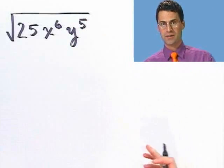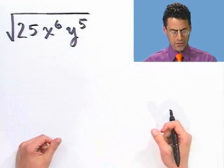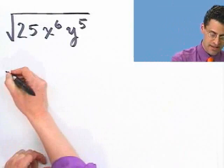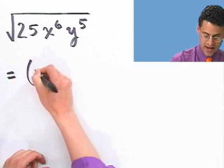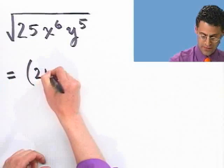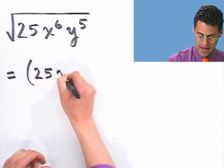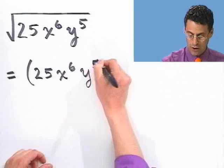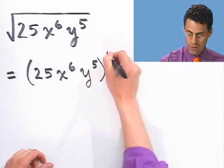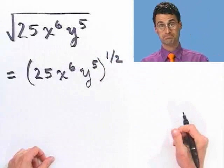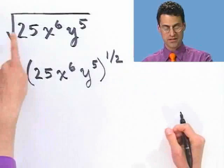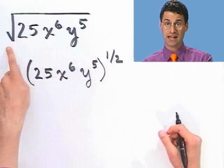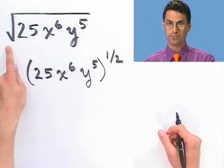The first thing to remember is that I can rewrite this as 25 x to the sixth y to the fifth, all raised to the one-half power — because a one-half power is the same thing as taking a square root.